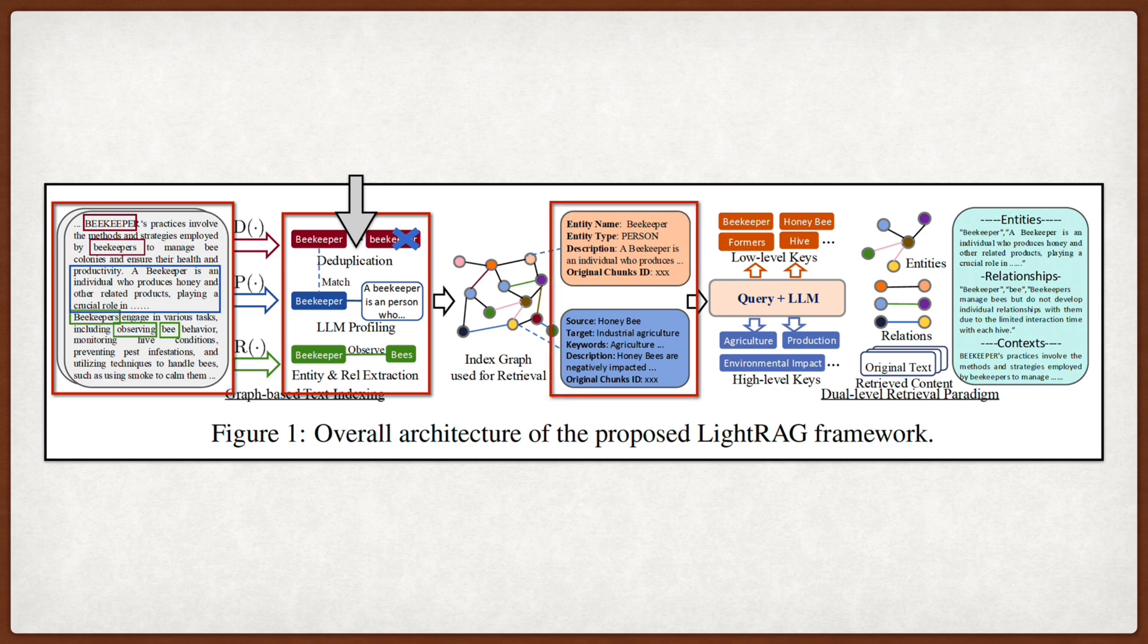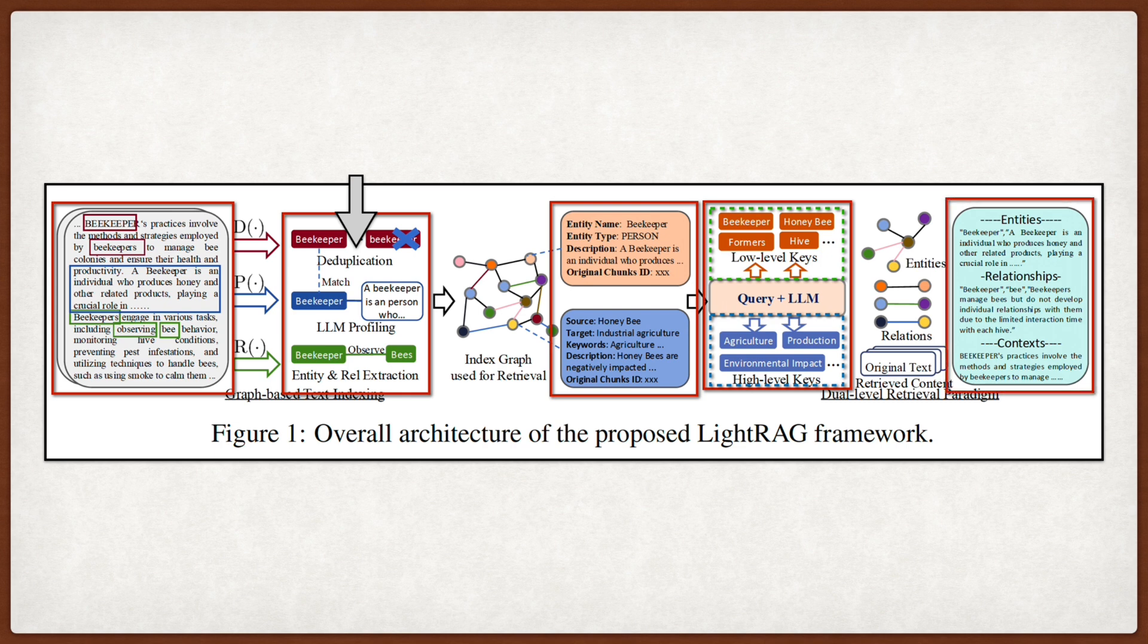The retrieval part is where they introduce this dual-level retrieval paradigm, which is designed to handle both specific queries about detailed entities and abstract queries about broader themes. For a given query, the model extracts local keywords for specific entities and global keywords for relationships, and then uses a vector database to match these keywords to the keys in the graph.